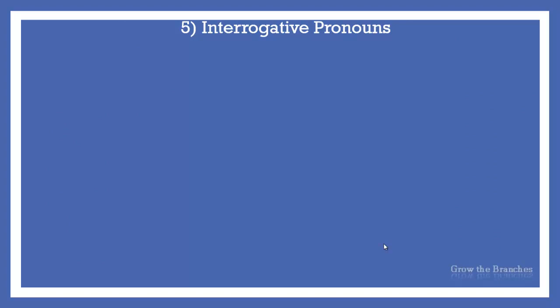Interrogative pronouns are used in forming questions. They always precede the verb and they are invariable for number and gender. They are: who, whom, whose, which, and what.